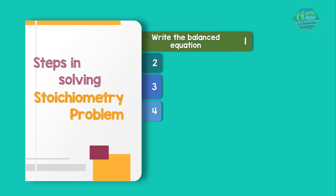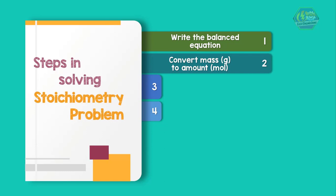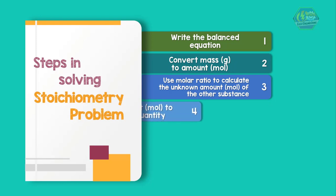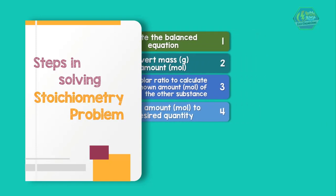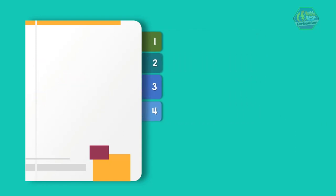First, write the balance equation. Second, convert the known mass in grams of a substance to amount in moles. Third, use the molar ratio to calculate the unknown amount in moles of the other substance. And fourth, convert the amount in moles of the other substance to the desired quantity.